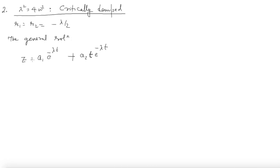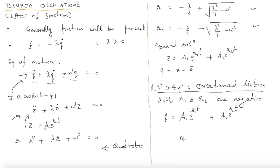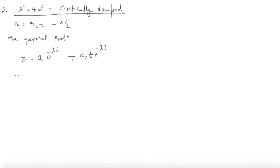This is again a non-oscillatory and non-periodic motion — the coordinate q never comes back to its original location, and things are not oscillating. The same was true for the over-damped case: it is non-periodic and not oscillatory. Both case one and case two share this character.